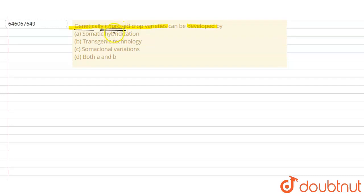Option A: somatic hybridization, Option B: transgenic technology, Option C: somaclonal variation, Option D: both A and B. When we talk about genetically modified or genetically improved properties, they are basically developed by different techniques. Multiple techniques can be used to produce genetically modified or improved crop varieties.